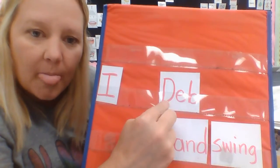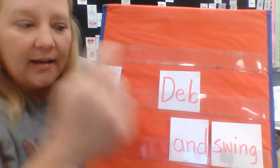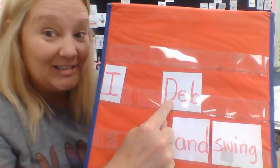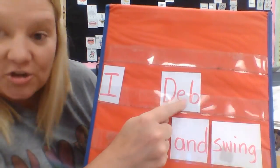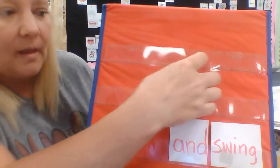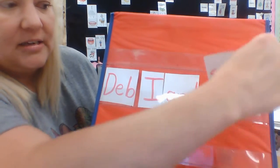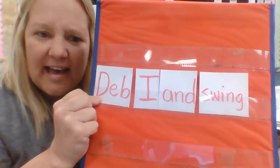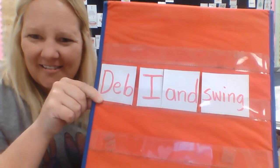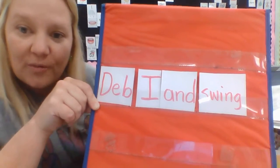Let's look at this word: Deb. That's a name — a girl or a woman's name. And do you see an uppercase capital? I do. We know that names have to have an uppercase capital. Maybe this word is going to start our sentence. Let's try it: Deb, I and swing. Does that make sense? No. Does it sound right? No — that's silly! Let's keep moving them around and see which one makes sense.